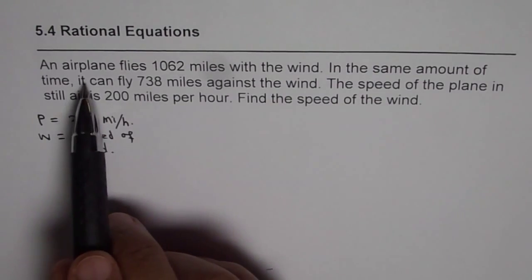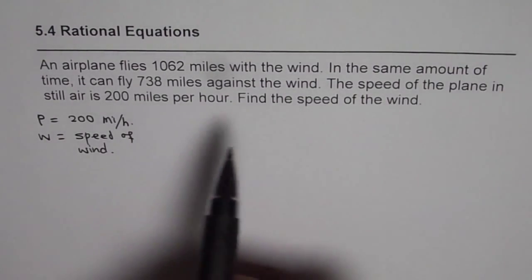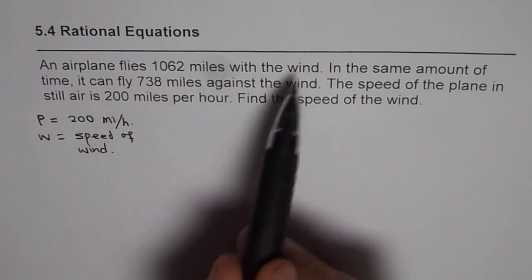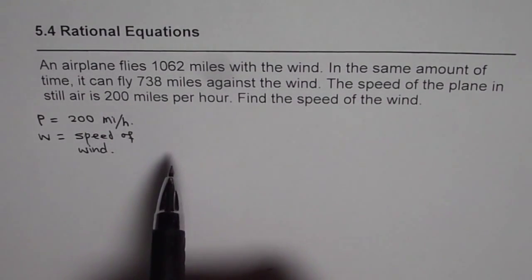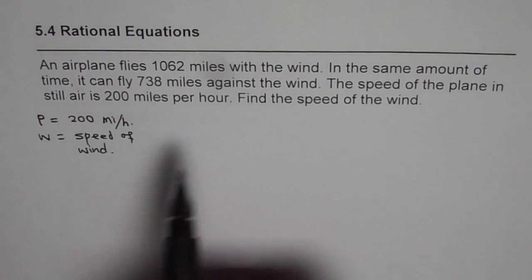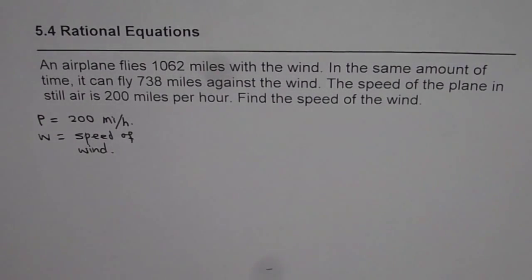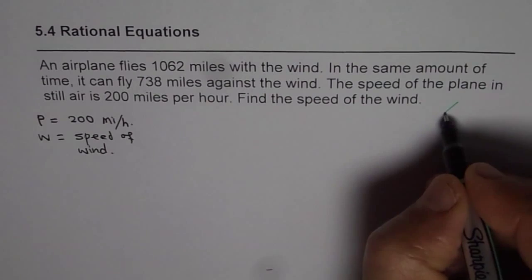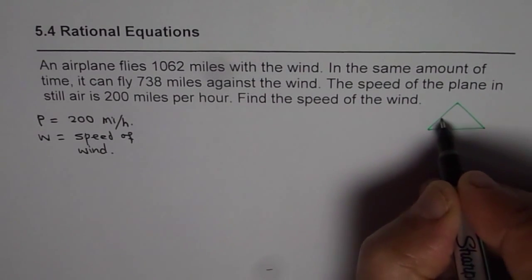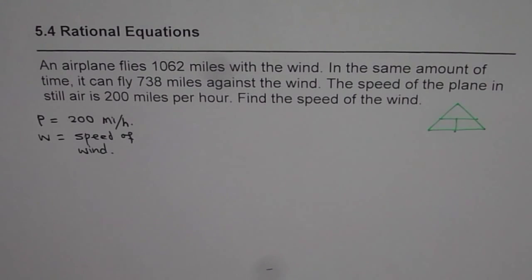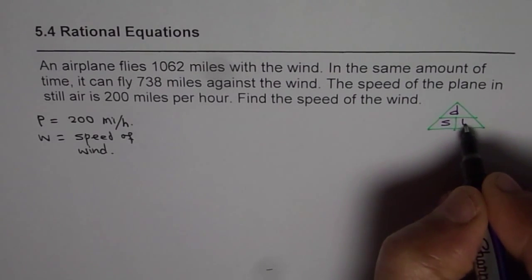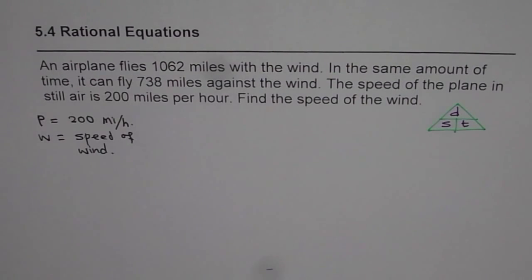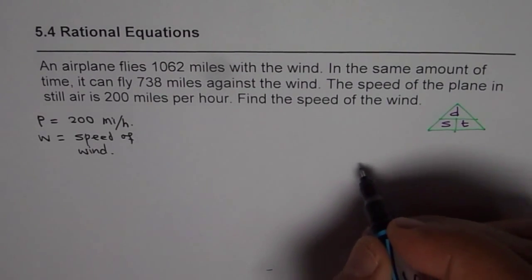Now the question is that the plane can fly in a fixed amount of time, distance of 1062 miles when it goes with the wind and a distance of 738 miles when it goes against the wind. Now that same time can give us an equation which we can solve. So I will suggest that when we are doing speed distance time problems, we should look into a couple of things. First is the triangle itself which relates speed, distance, and time. So we know distance equals speed times time.